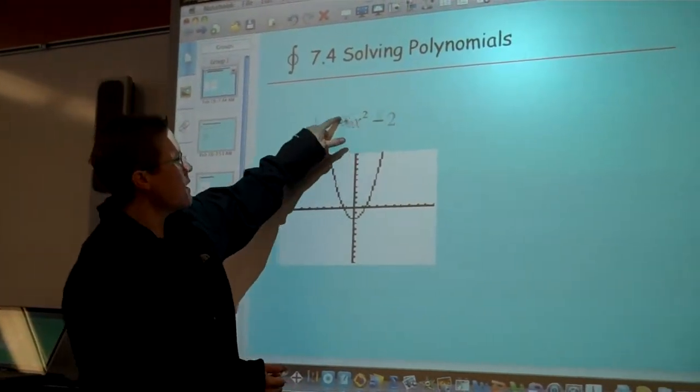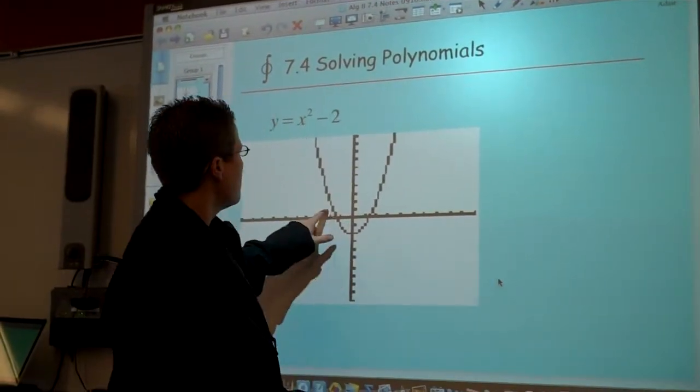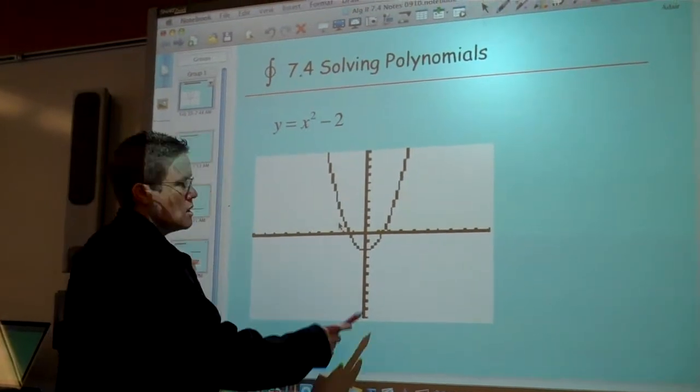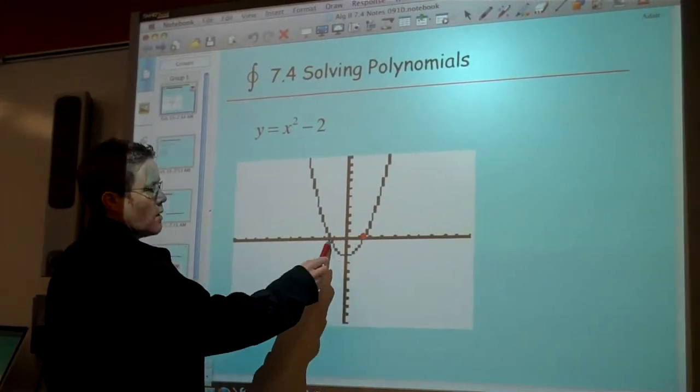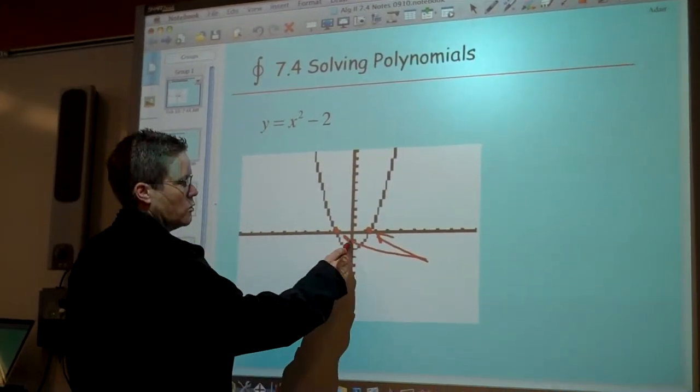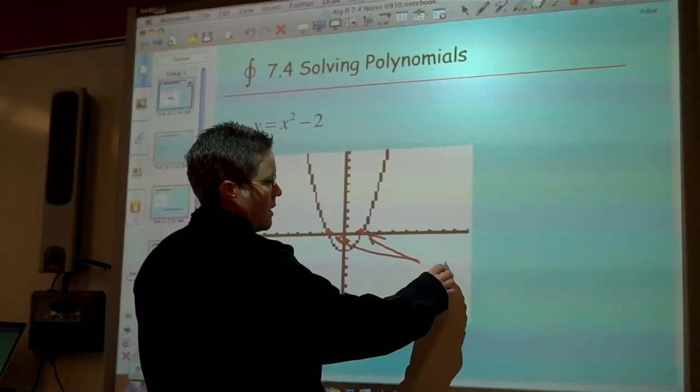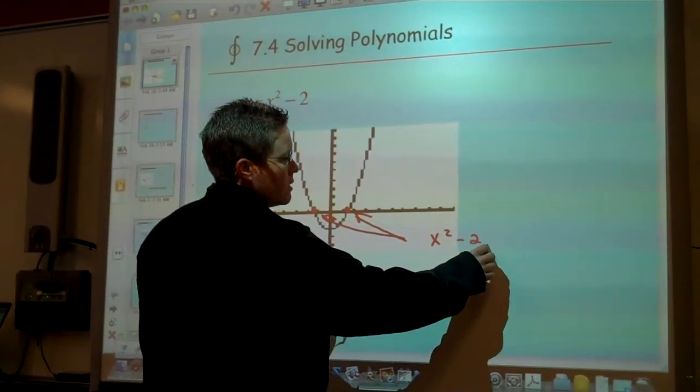First thing we'll take a peek at is y equals x squared minus 2, and our idea here is to come up with what the zeros of the function represent. And when we look at the x-intercepts, root solutions, we're looking at the value of x when y equals 0.